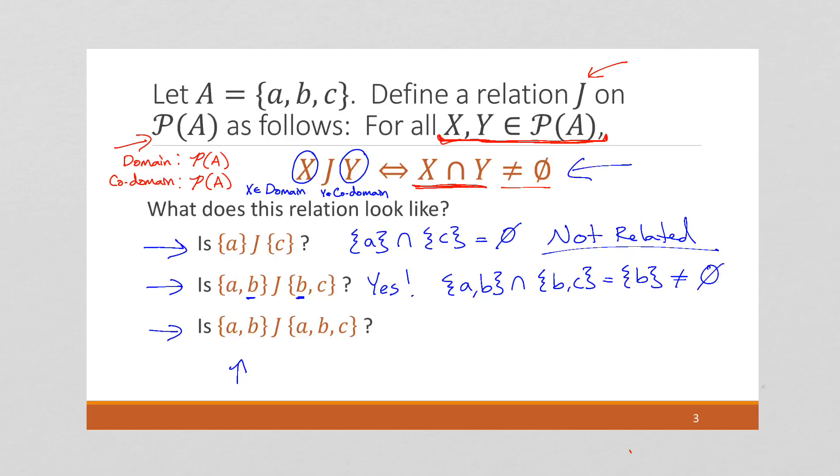Okay, let's do this last one. Is the intersection between these sets empty or non-empty? It should be non-empty. So these are related, because {a, b} intersect {a, b, c} is {a, b}, which again is not empty. So these sets are related, and these sets are related, but these sets are not related, based on this relationship J.